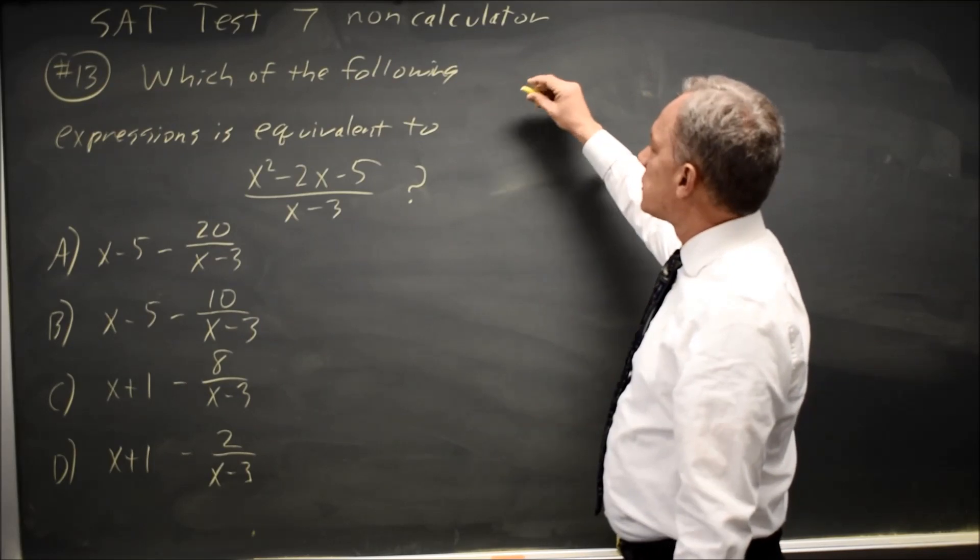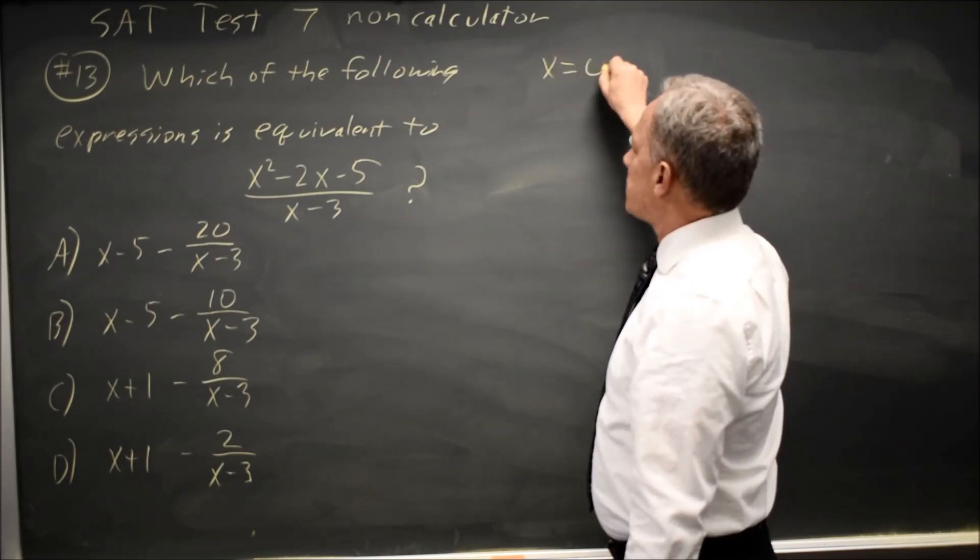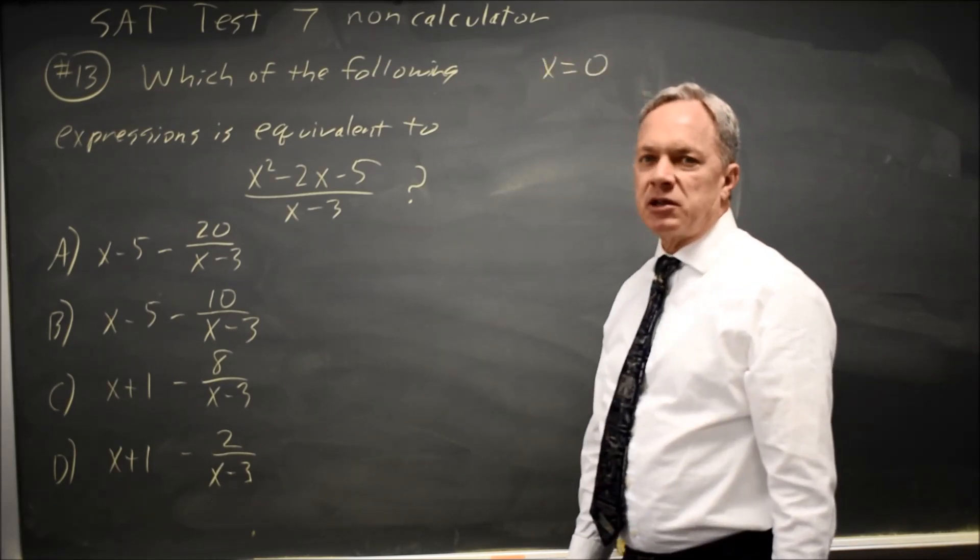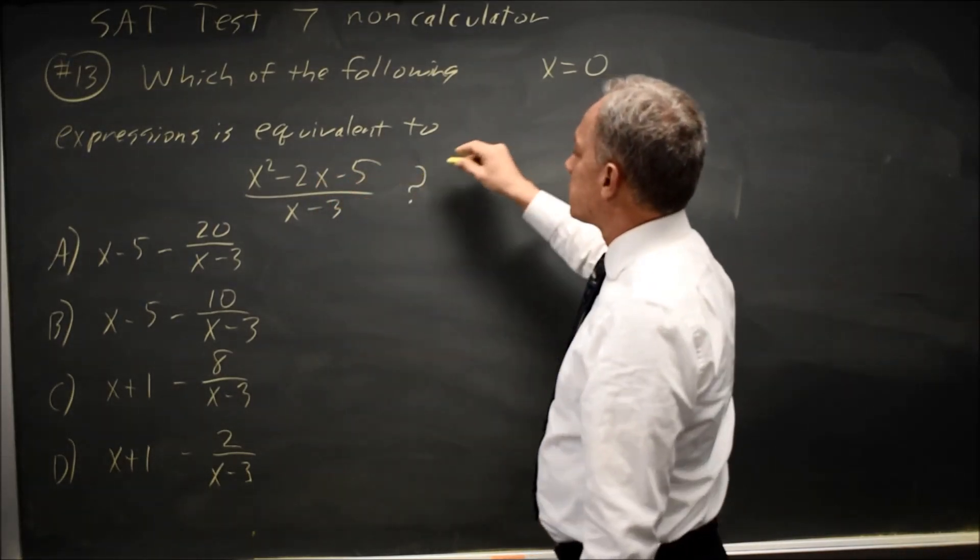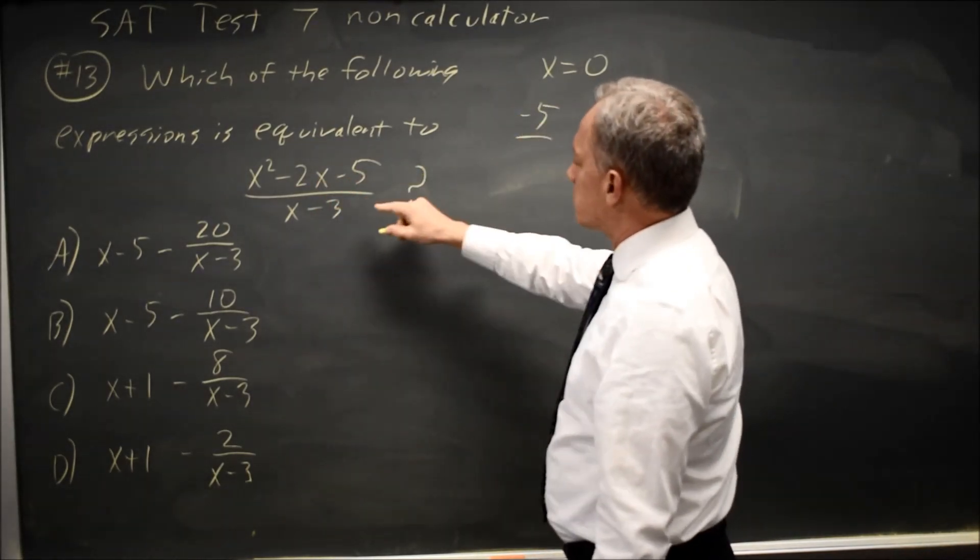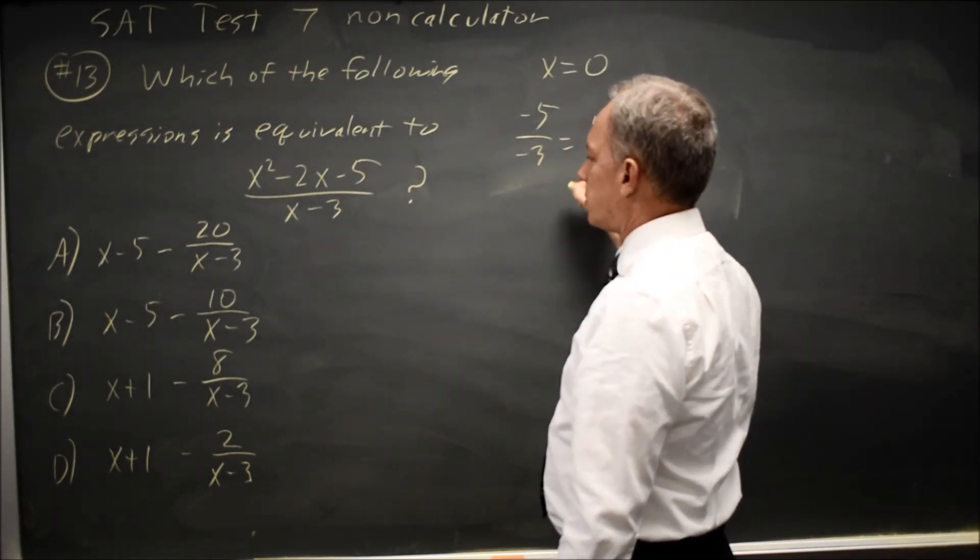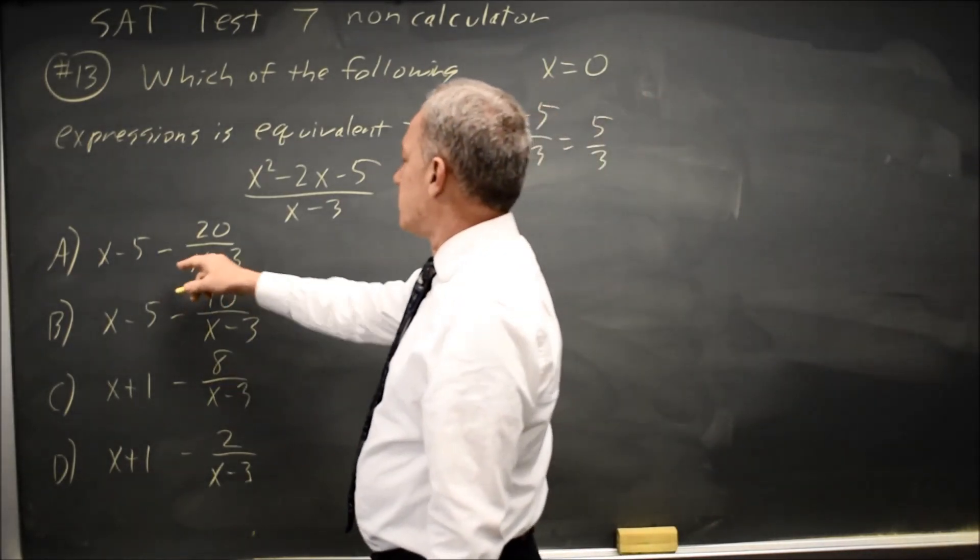As I always do, I'm going to try substituting a simple value like x equals 0 and see if that can eliminate some of the choices. At 0, this is 0 minus 0 minus 5 over 0 minus 3 equals positive 5 thirds.